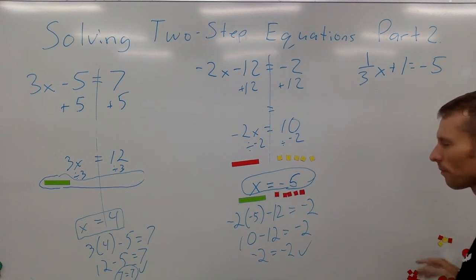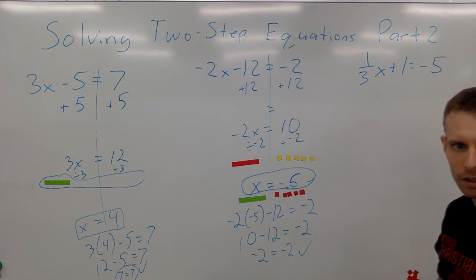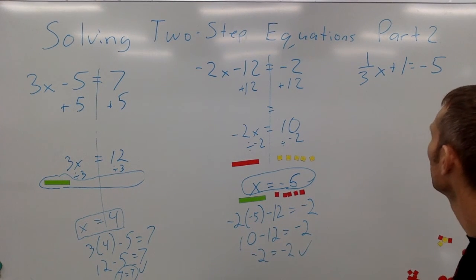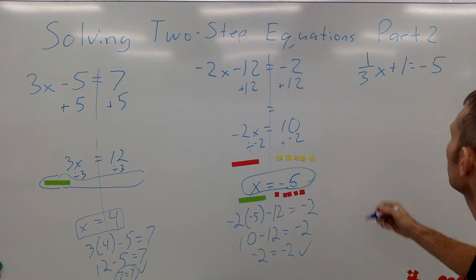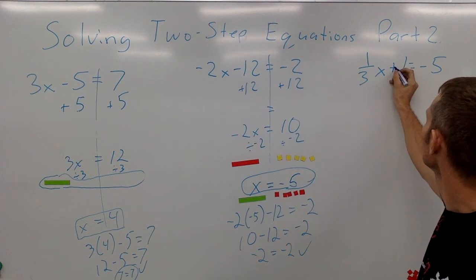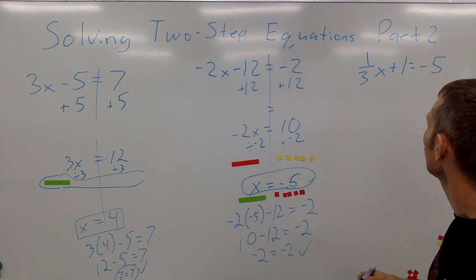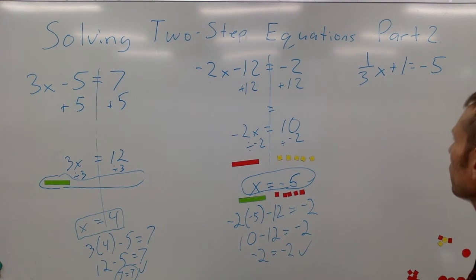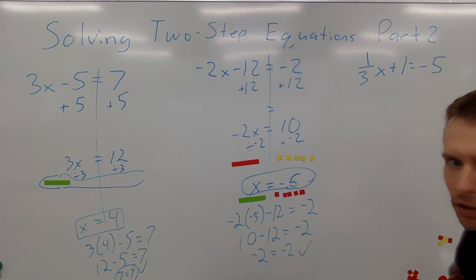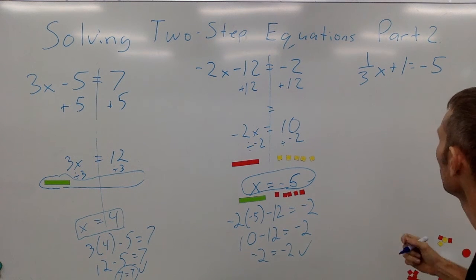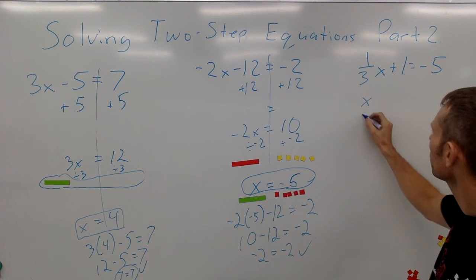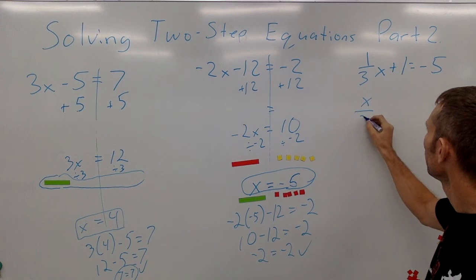The last example is one-third x plus 1 equals negative 5. It's a bit difficult to model one-third x with algebra tiles, but the same principle applies.